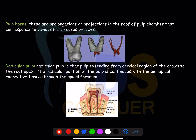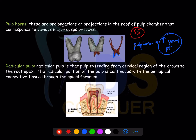Pulp horns are projections moving towards the roof of the pulp. Pulp horns are highly placed in young patients, and that is the reason why crown cutting is contraindicated in young permanent teeth. We regularly go for stainless steel crowns, because once dentin deposition is done the horns drop down.